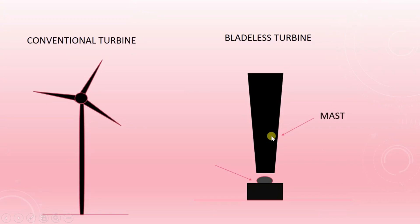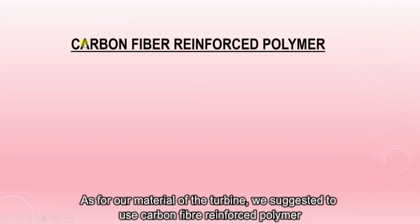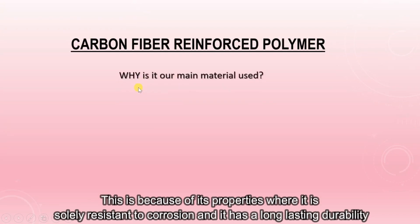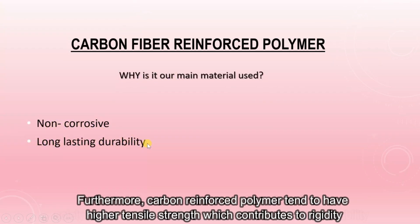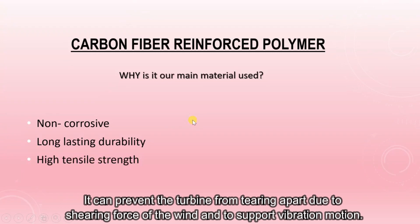From the diagram, we are able to see the mass, followed by the generator which is at the bottom, and also the anchor which is supported by the generator. As for the material of the turbine, we suggested using carbon fiber reinforced polymer. This is because of its properties — it is highly resistant to corrosion and has long-lasting durability. Furthermore, carbon fiber reinforced polymer tends to have higher tensile strength, which contributes to rigidity, and can prevent the turbine from tearing apart due to the shearing force of the wind and to support vibration motion.